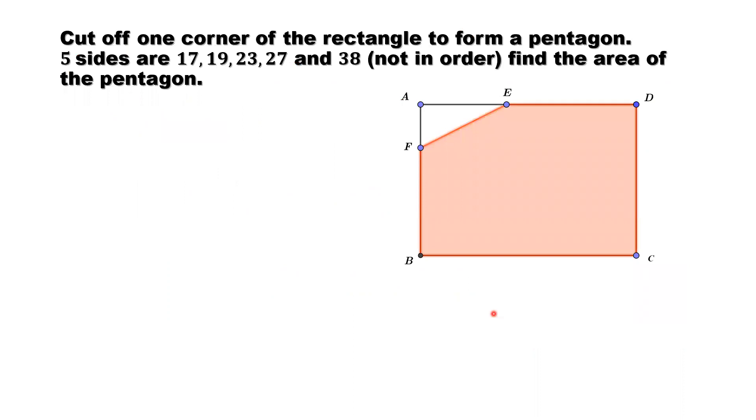Based on the Pythagorean theorem, we know that for this right triangle AFE, we have AE squared plus AF squared equals FE squared.